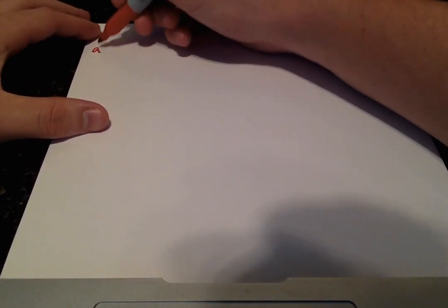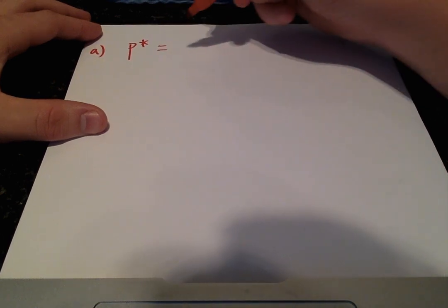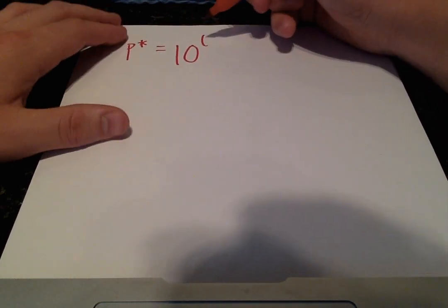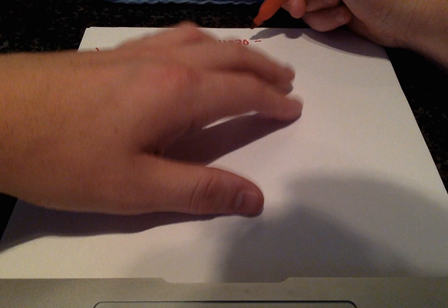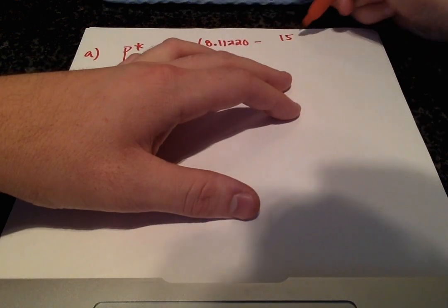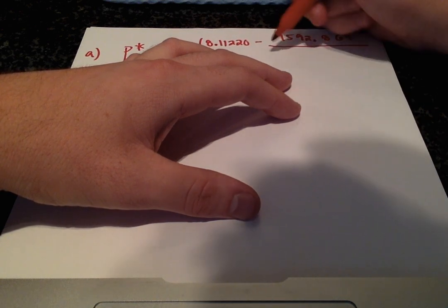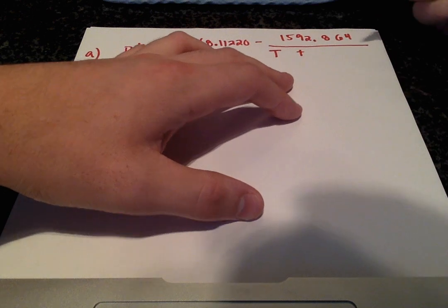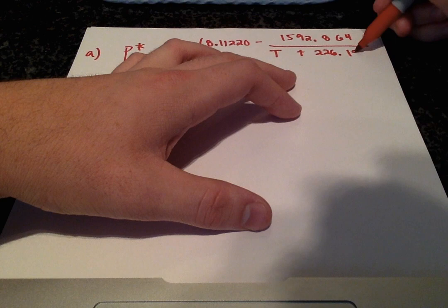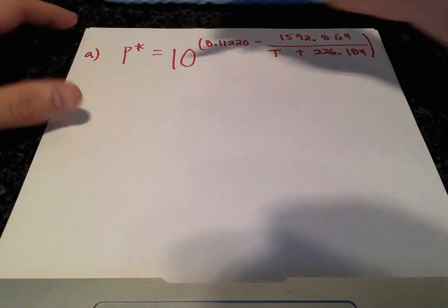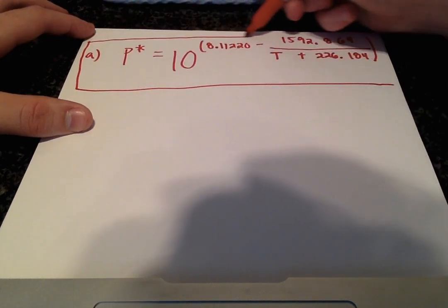We get, for part A, that vapor pressure is equal to 10 raised to 8.11220 minus 1592.864 over the temperature. And there we have it. Part A is complete,